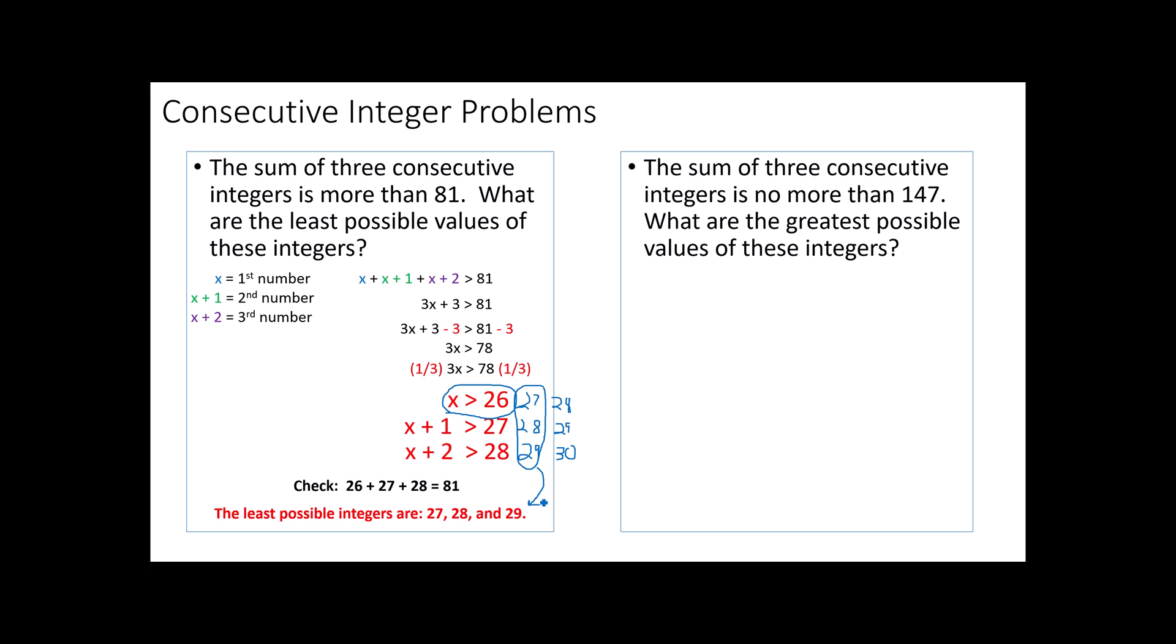Tell you what, take just a second, pause the video, and try that second example on your own, and then we'll look at it together. I'm going to assume you've already done that. The sum of three consecutive integers is no more than 147. Again, this is a consecutive integers problem, which means I'm using an x, an x plus 1, and an x plus 2, and I'm told their sum is no more than 147. That phrase, is no more than, should remind you of a mathematical symbol. No more than means less than or equal to 147. Solving this should not be overwhelming, so I'm going to do that fairly quickly. We come up with x is less than or equal to 48. That means x plus 1 is less than or equal to 49, and x plus 2 is less than or equal to 50.